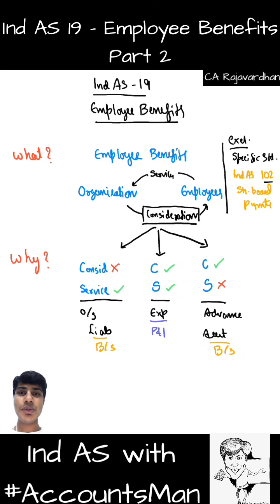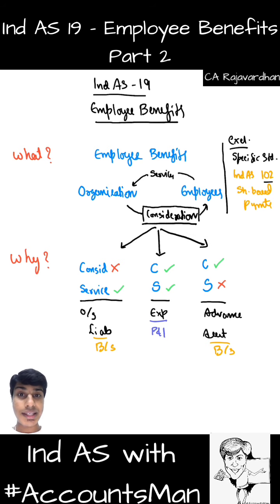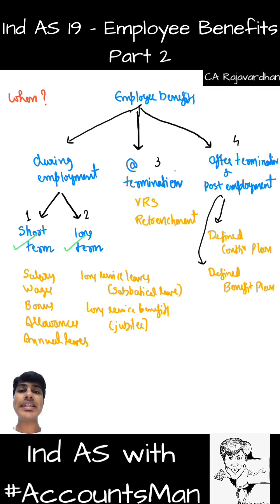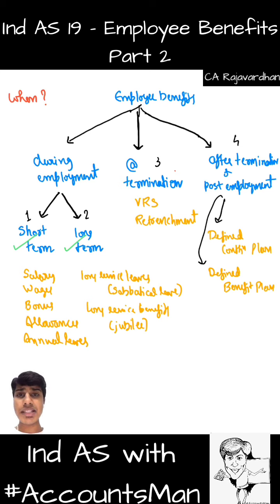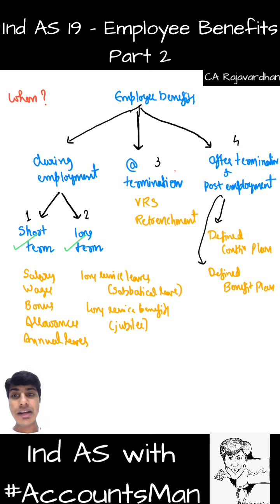Welcome back to the series of videos on Ind AS with Accounts Man. In this session, we'll continue Ind AS 19 from where we left off. In the previous session, we discussed what exactly employee benefits means, why we have a standard regarding employee benefits, and when we discharge these benefits. Employee benefits can be paid at different intervals: during employment, at termination, or post-employment. We discussed during-employment benefits completely — both short-term and long-term.